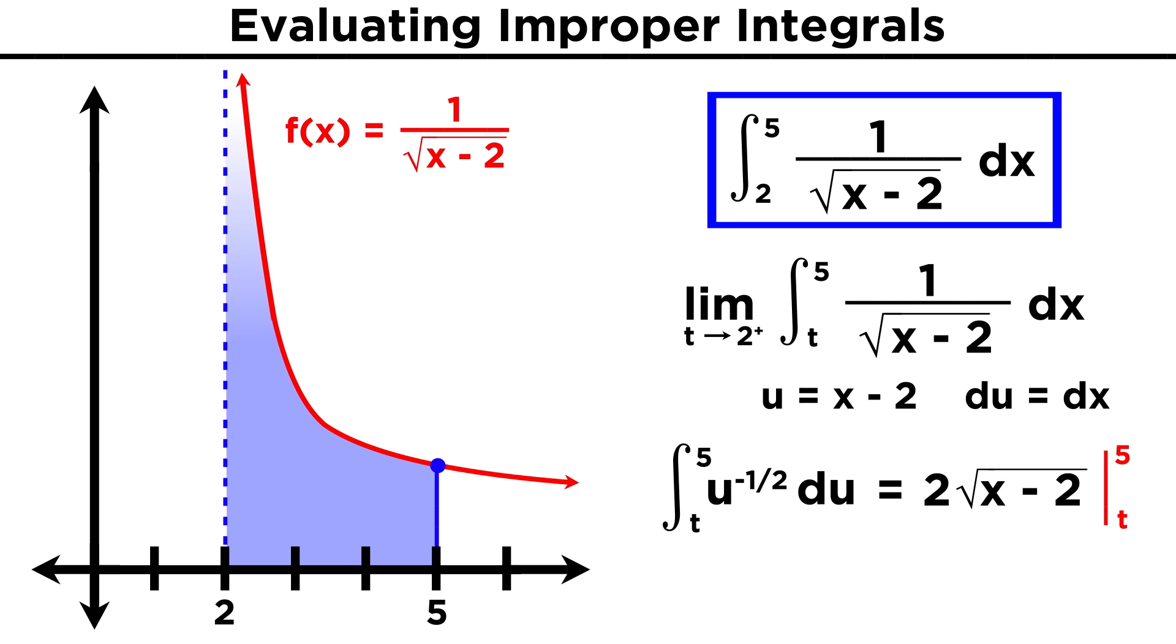Let's evaluate this at five and t. For five, we get two root three, and for t we get two root t minus two. As t approaches two from the positive direction, what's inside this radical remains positive but gets closer and closer to zero, and in the limit of t approaching two, this term will become zero.